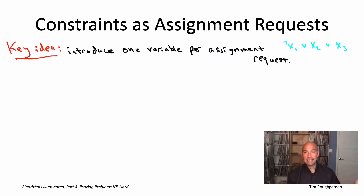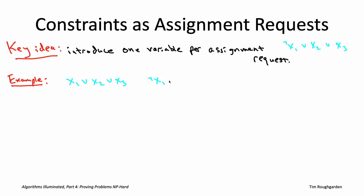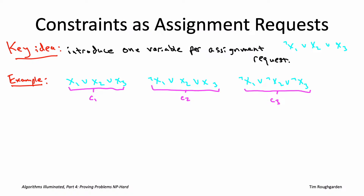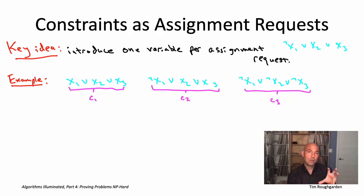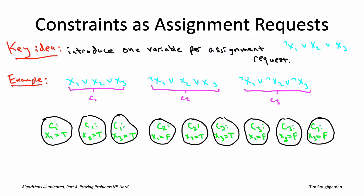The key idea in the reduction is that in the graph we construct from the 3SAT instance, we have one vertex for each variable assignment request. So a clause like not x1 or x2 or x3 gives rise to three vertices: one requesting x1 is false, one requesting x2 is true, one requesting x3 is true. For example, with three constraints each being a disjunction of three literals — say not x1 or x2 or x3, then x1 or x2 or x3, then not x1 or not x2 or not x3 — we get nine vertices total, one for each of the nine assignment requests.